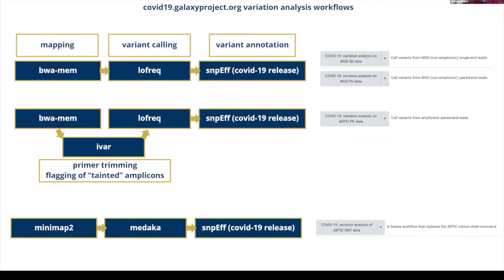Part of the analysis I just talked about is looking at genomic variation of SARS-CoV-2. We've put together a number of workflows that do this for whole genome sequencing Illumina data, as well as ARCTIC data prepared for Illumina and for nanopore sequencing. Much of the side branches of the workflow are the same between these different analyses, but the core changes depending on the modality used.